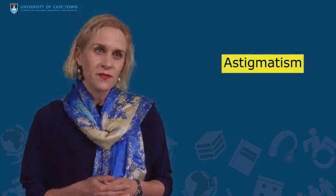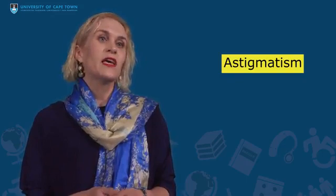Astigmatism is another refractive error that can be corrected with glasses. Here, the cornea is not exactly spherical but more oblong shaped — not shaped like a soccer ball, but a bit more like a rugby ball.